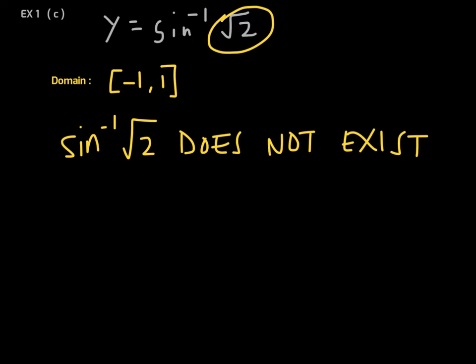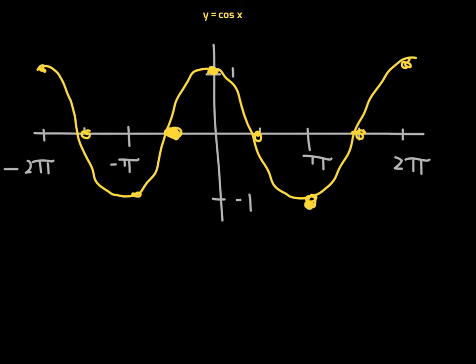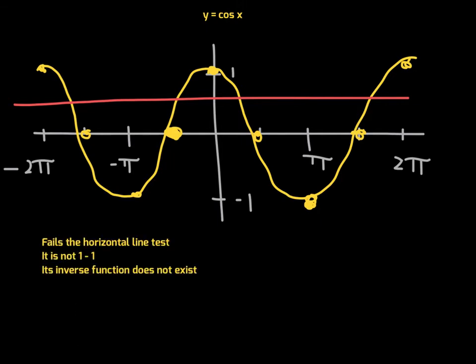Now let's move to the cosine function. Starting with the basic graph for cosine of x — two periods worth — the story is the same: this is not a one-to-one function. It fails the horizontal line test, so its inverse function fails to exist unless we restrict the domain.